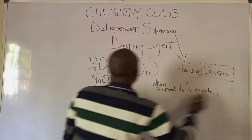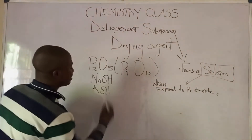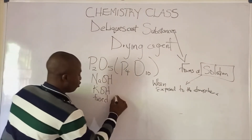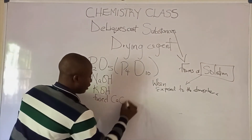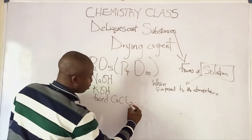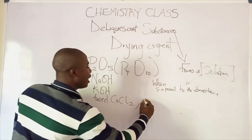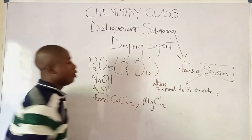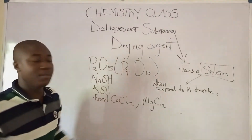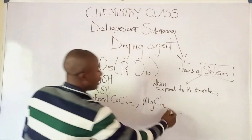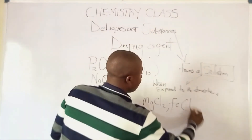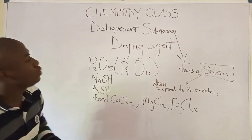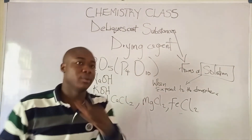Now we have other examples like fused calcium chloride, and we have compounds like magnesium chloride, and even iron(II) chloride. All of these are examples of deliquescent compounds.